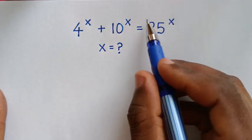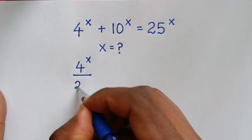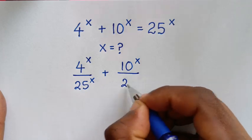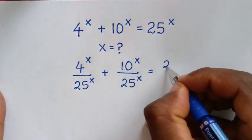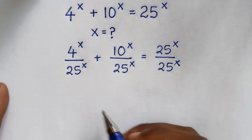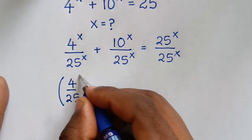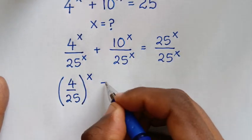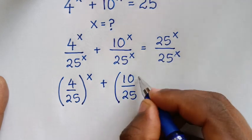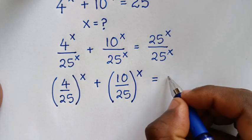In the first step, we'll divide both sides by 25^x. So it becomes 4^x over 25^x, plus 10^x over 25^x, is equal to 25^x over 25^x. Since the power x is common, this gives (4/25)^x plus (10/25)^x equals 1.